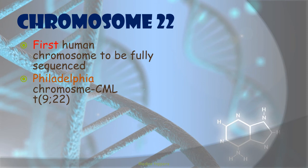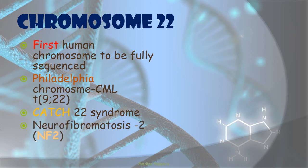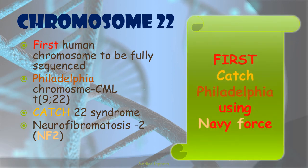Chromosome 22 is associated with chronic myeloid leukemia (CML) as the Philadelphia chromosome with translocation t(9;22), CATCH-22 syndrome, and Neurofibromatosis type 2 (NF2). The mnemonic is 'First, catch Philadelphia using the Navy force' — First for first chromosome fully sequenced, Catch for CATCH-22 syndrome, Philadelphia for the Philadelphia chromosome in CML, and Navy Force for Neurofibromatosis 2.